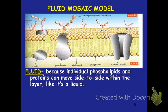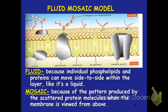We call the cell membrane the fluid mosaic model. It's fluid because it's able to move and is flexible — the phospholipids are able to move from side to side like a liquid. We call it mosaic because it produces a pattern from above of all the different scattered protein molecules and different parts. A mosaic has many different parts that together make a picture — so this is called the fluid mosaic model.